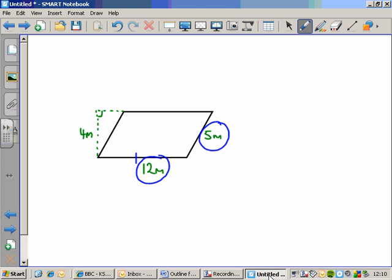We know about a parallelogram, don't we, that it has two pairs of equal sides with the bottom here is twelve metres, the top is also, and the two diagonals are five metres in length as well.